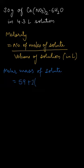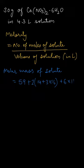We write the atomic mass of nitrogen, that is 14, plus 3 times the atomic mass of oxygen, that is 16. Now we are having 6 moles of water, and we know the molecular mass of water is 18, so we write 6 times 18 for water. On solving, that comes out to be 291 grams per mole — that is the molar mass of the given solute.